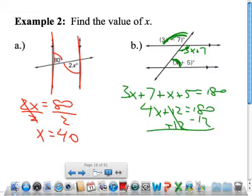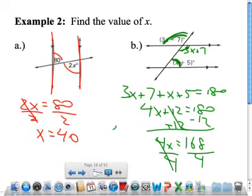And so we're sitting at, we got 4x is equal to 168. If we divide both sides by 4, that tells us that x is equal to 42.